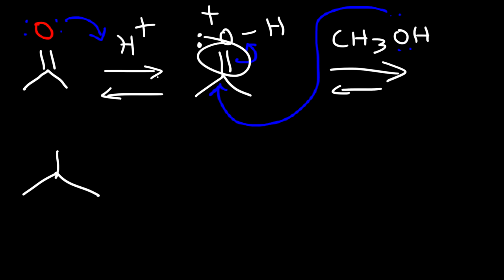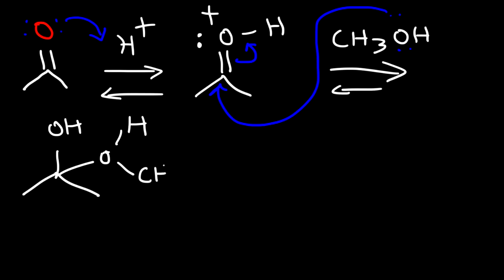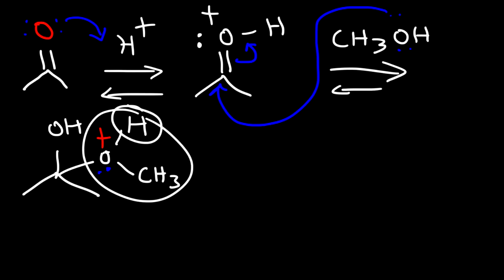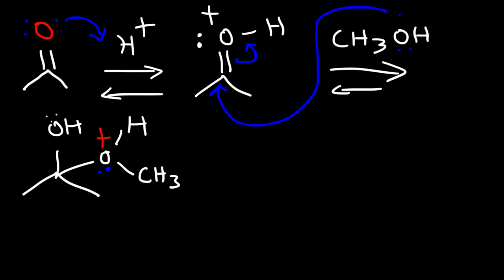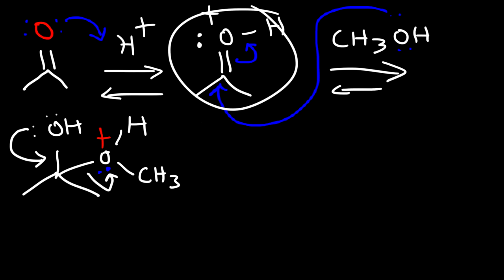The double bond is going to break, so we're going to have an oxygen attached to a hydrogen and a methyl group, and now that oxygen has a positive charge. At this point we need to get rid of this hydrogen atom, because right now this group is a good leaving group — anytime oxygen has three bonds, it's a good leaving group. The OH group could take a lone pair, form a double bond, and kick this group out, which would take us a step back — which we don't want.